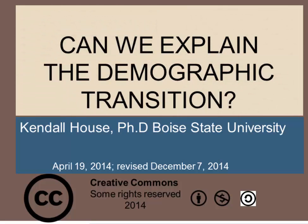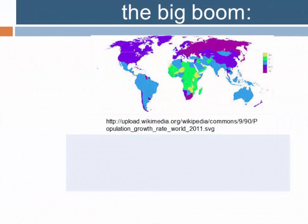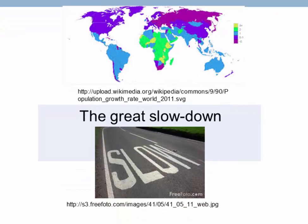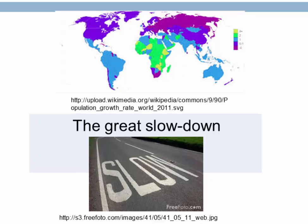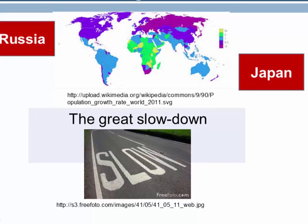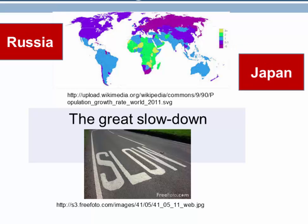This presentation is called 'Can We Explain the Demographic Transition?' On the other side of the big boom is something quite unexpected that we can call the great slowdown. In some areas of the world, population growth has not merely slowed down but stopped — most prominently in nations like Japan and Russia, where populations are actually declining.